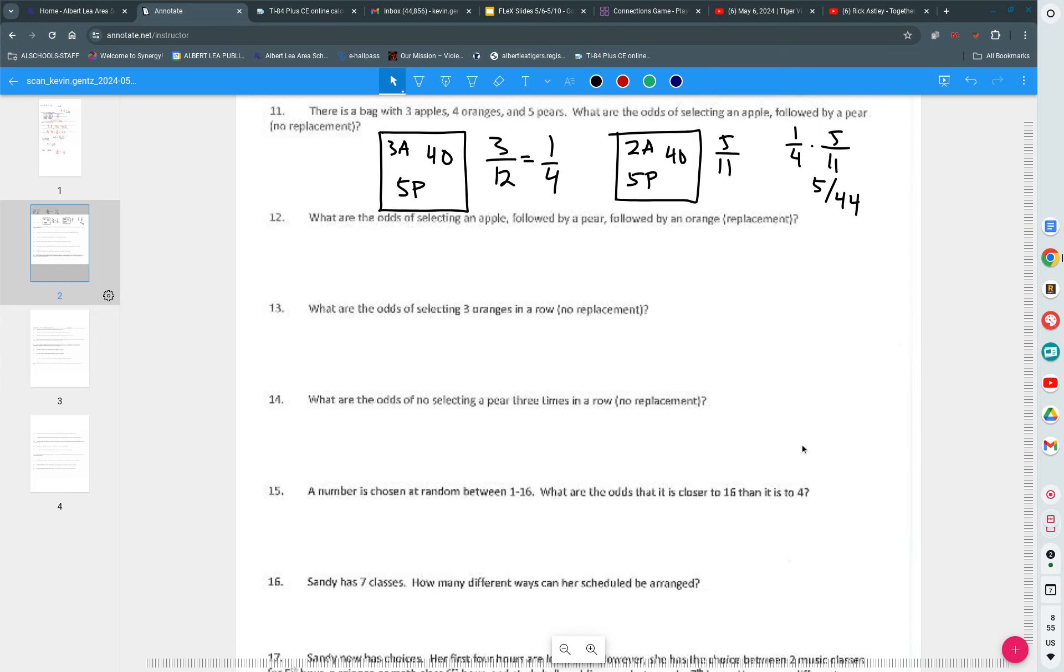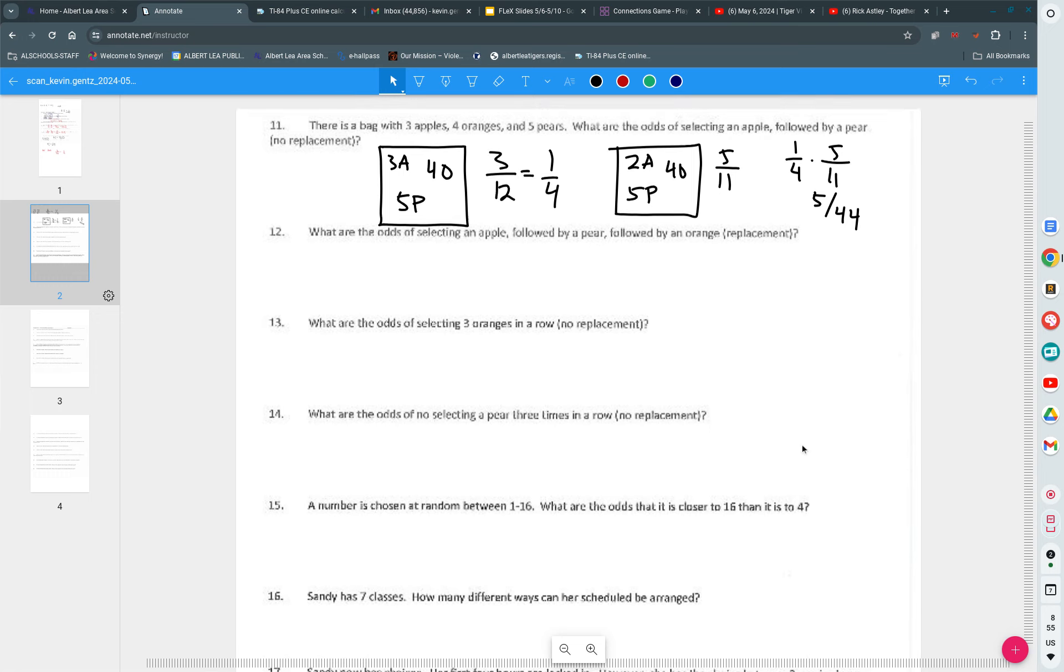What are the odds of selecting an apple followed by a pear, but you did, in fact, put the apple back in? Well, obviously, it stays 1 out of 4 for the first one, but the second one, there's not 11 pieces of fruit in there. There's 12 pieces of fruit in there. And how many pears are in that grouping of 12? Five. So the odds are 5 out of 12. Oh, and then an orange. I'm sorry. I didn't read the whole problem. And then we have an orange. And an orange would be what? 4 out of 12, or otherwise known as 1 out of 3. So as you multiply these together, on top you're going to get a 5. And on bottom, you get 4 times 3 is 12 times 12 more is 144.